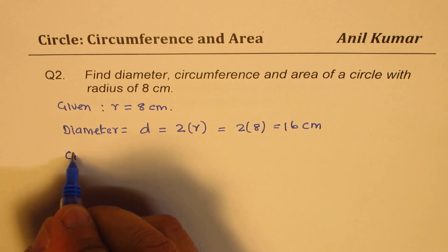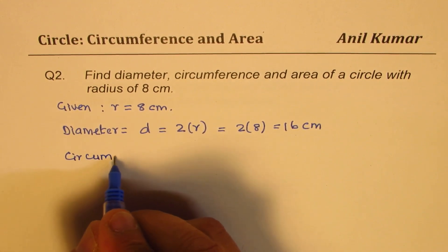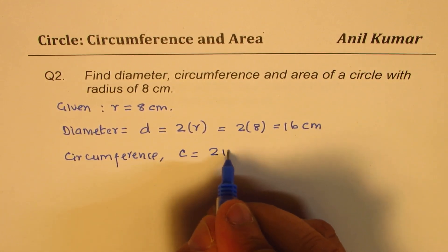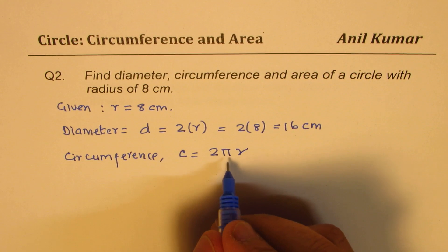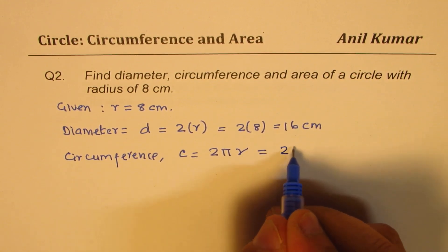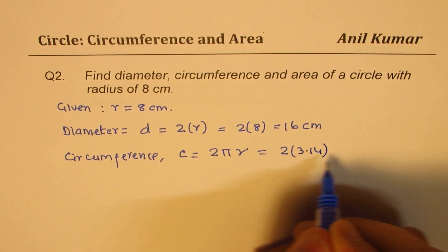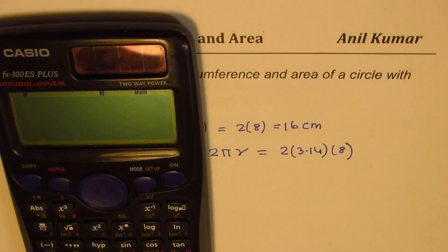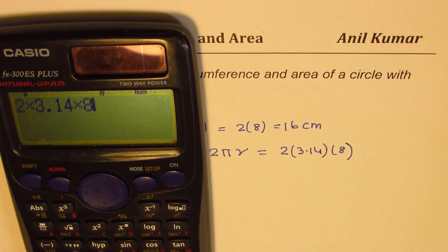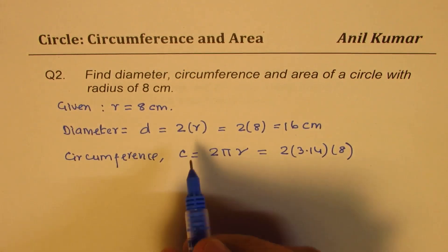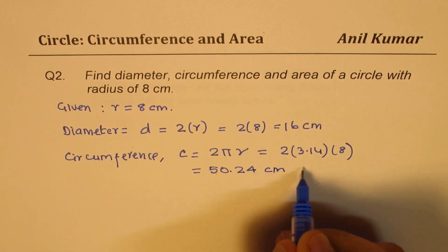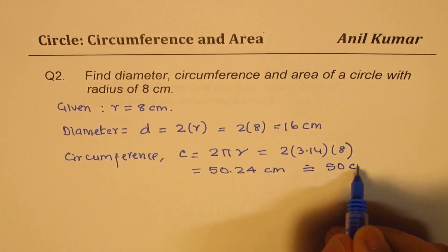Now, let's find circumference. Circumference C equals 2πr. When radius is given, it's good to use 2πr. So, that is 2 times 3.14 times the radius of 8, which gives us 50.24 in decimals.